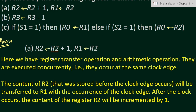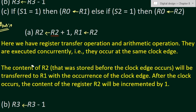Here we have register transfer operations and arithmetic operations that are executed concurrently. You can see this arithmetic operation and these register transfer operations — the arrows mean transfer operations. These two operations will occur at the same clock edge.